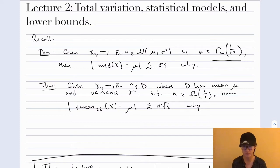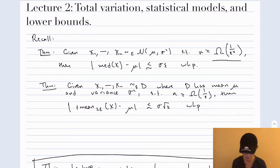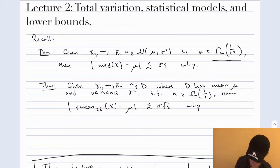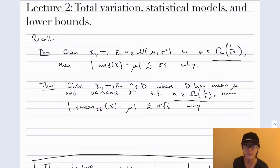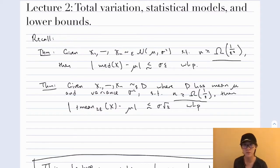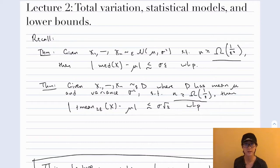We also proved a similar theorem where our distribution is only assumed to have variance sigma-squared and nothing else. If we were given an epsilon-corrupted set of samples from such a distribution, of size at least omega of 1 over epsilon, then the truncated mean differs from the true mean, up to constants, by at most sigma root epsilon with high probability. Again, technically we only showed this for sigma equal to 1, but things scale naturally with sigma.